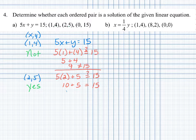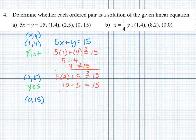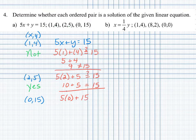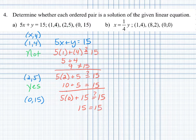Our last point to check is (0, 15). We plug in 0 for x and 15 for y into the original equation: 5 times 0 plus 15 equals 0 plus 15 equals 15. That does equal 15, so this is a solution to the given linear equation.